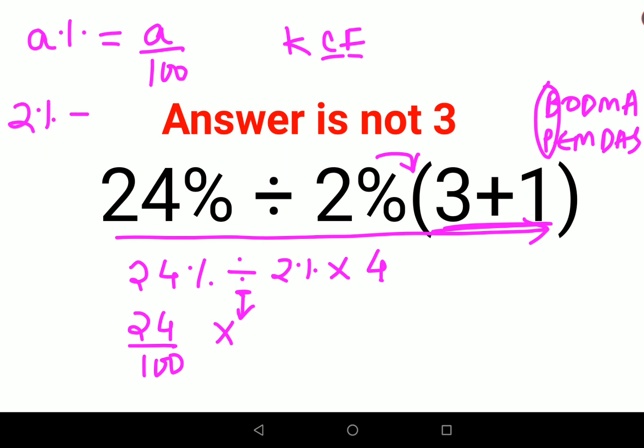Now see 2% was nothing but 2 upon 100. So reciprocal of 2 upon 100 is nothing but 100 upon 2. And we keep multiplying and the rest of it as it is.